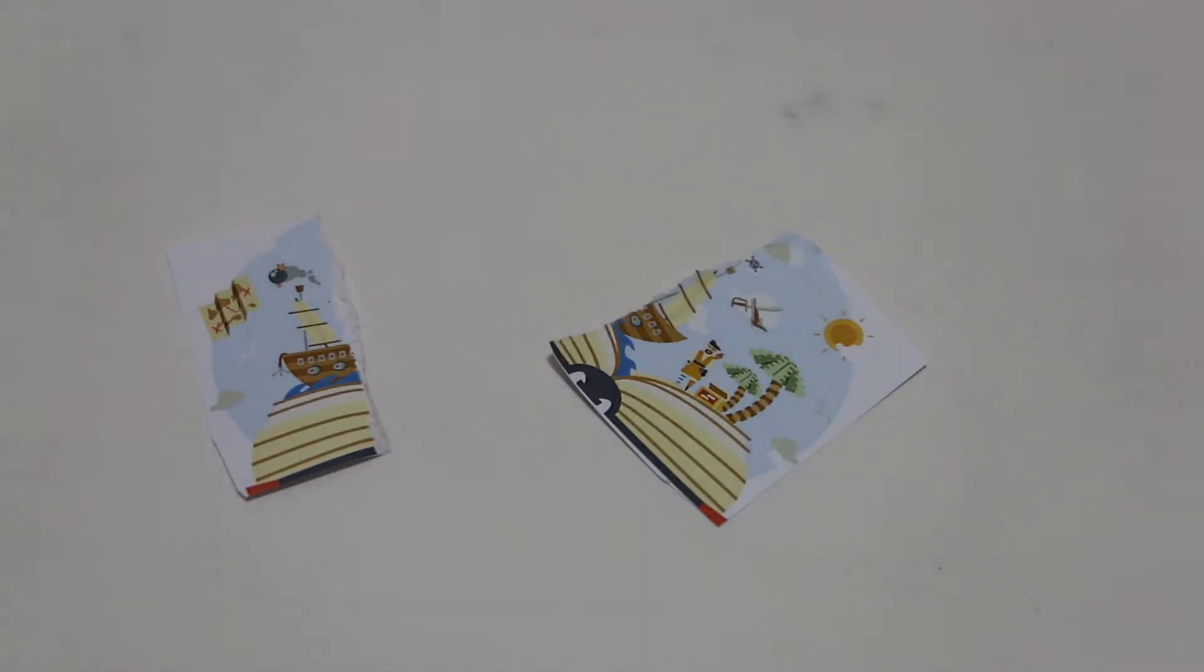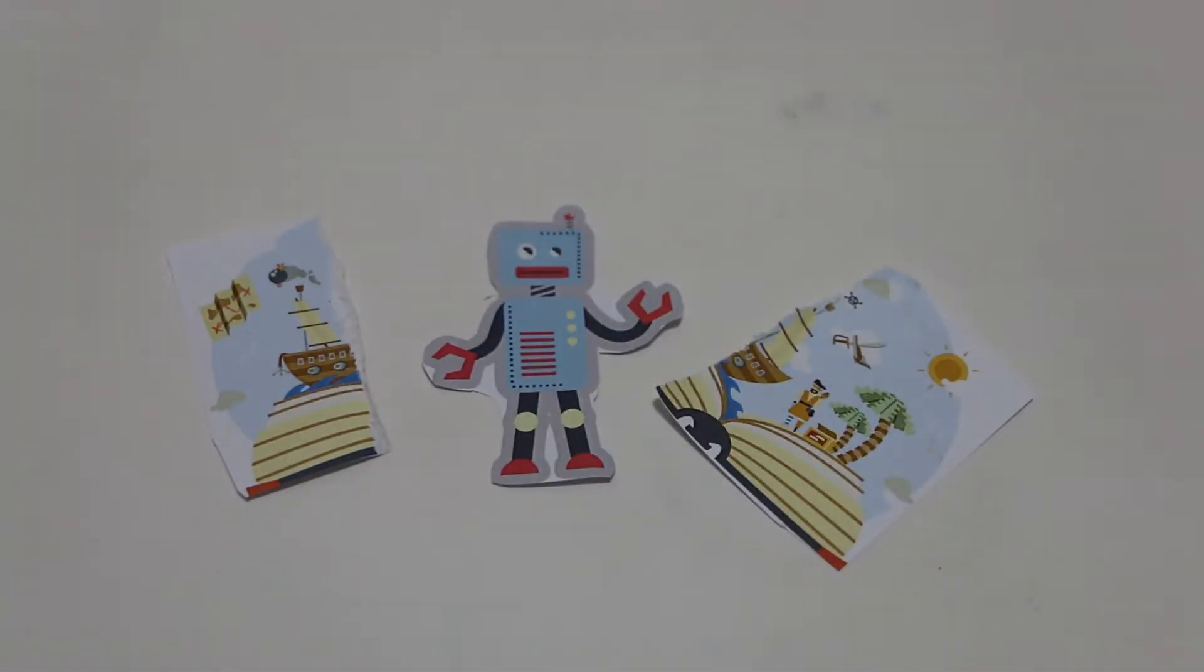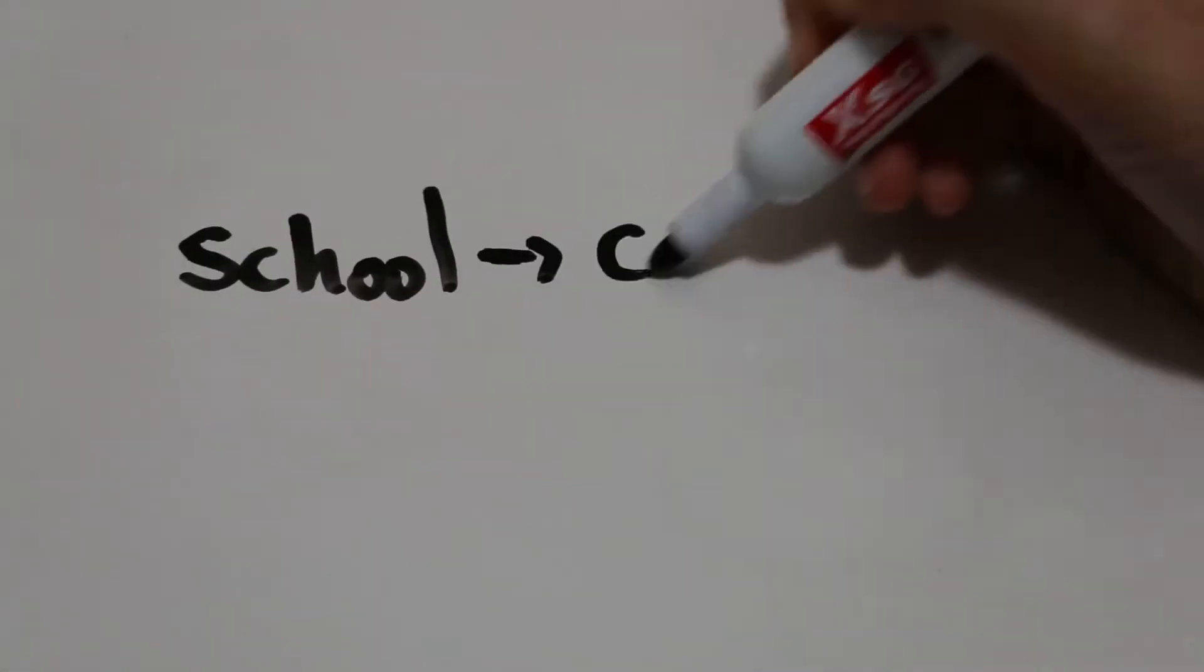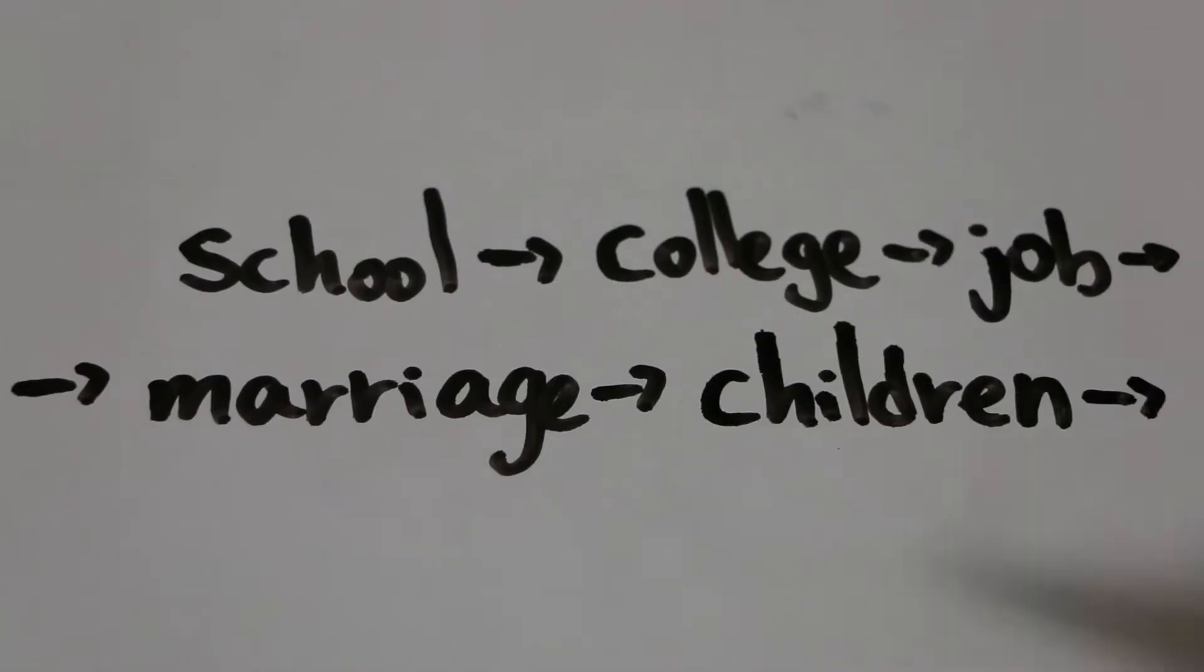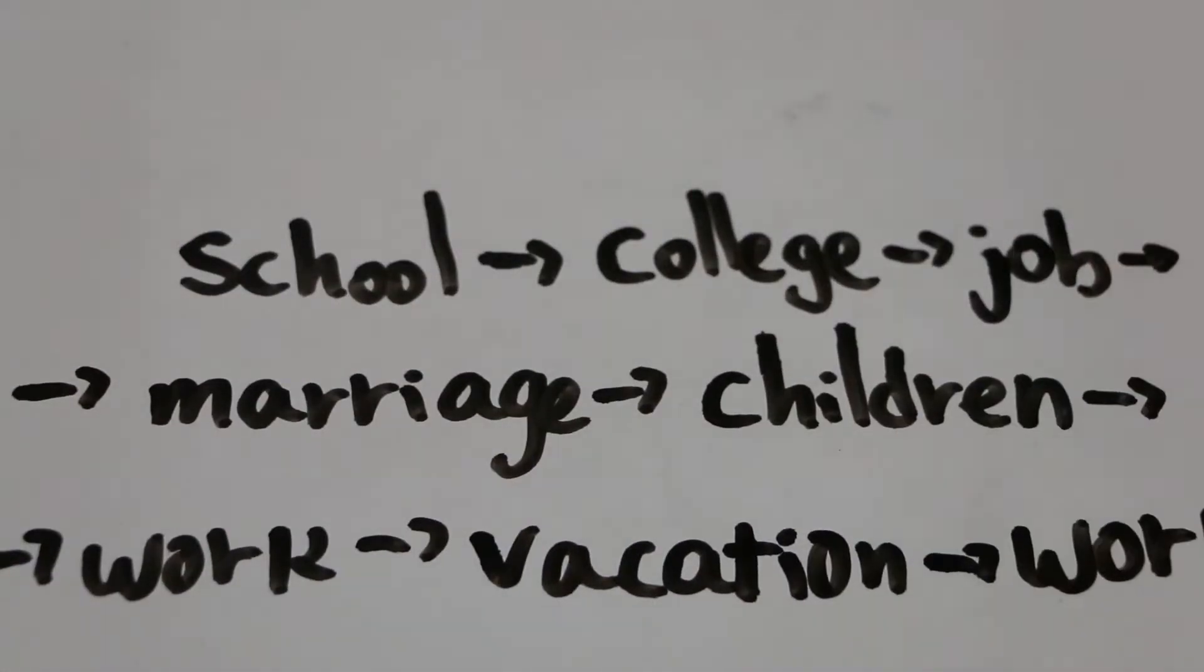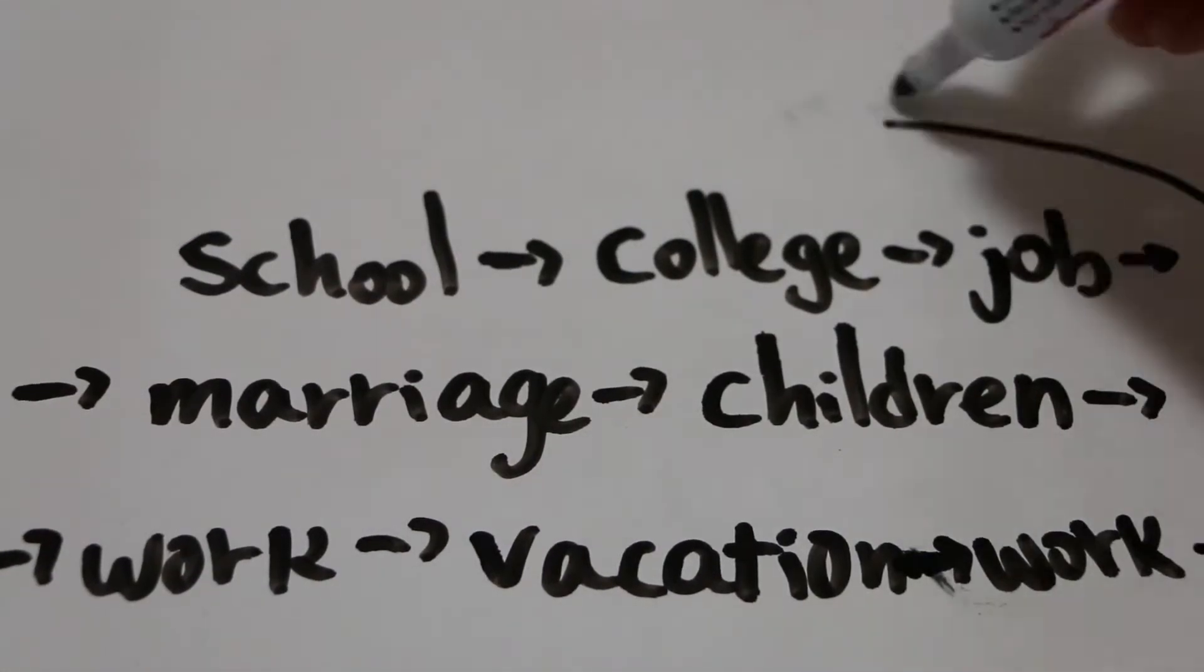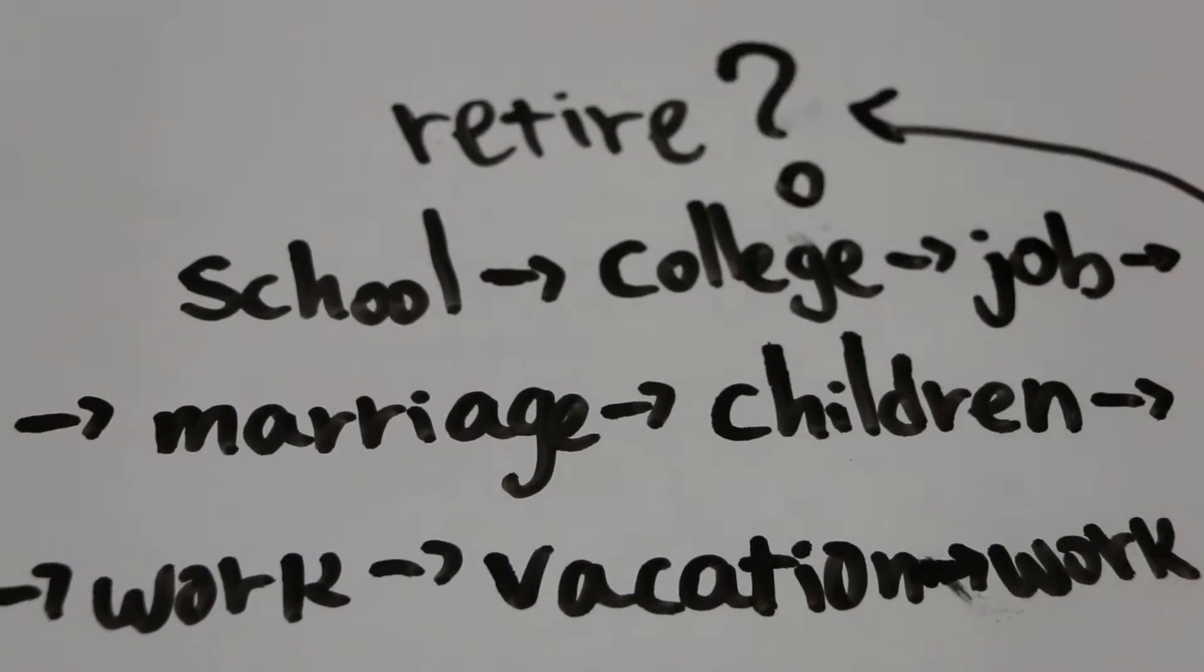His dreams are no longer important. He became a robot, walking through the path that others chose for him. From school to college, to getting a good job that pays good salary, getting married, having children, keep working, vacation from time to time, more working, finally retiring, and then life is over.